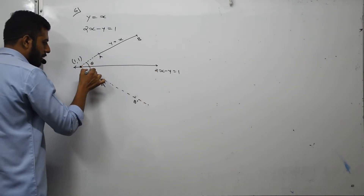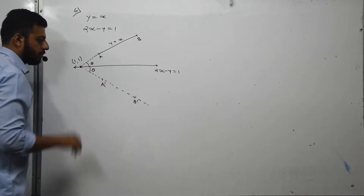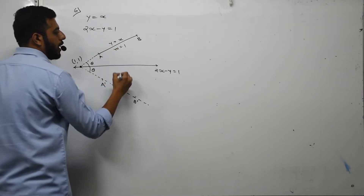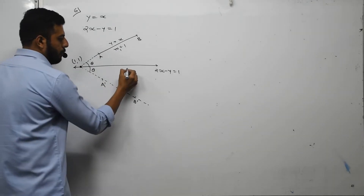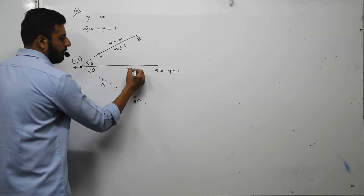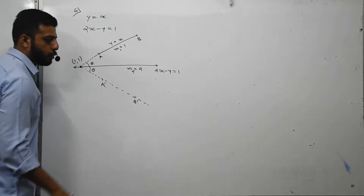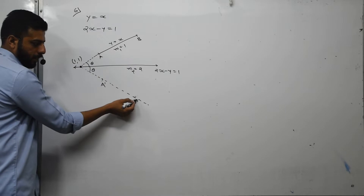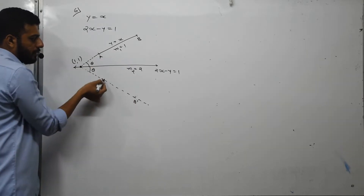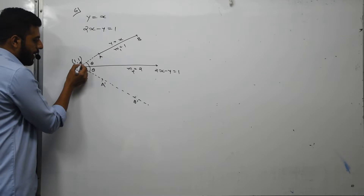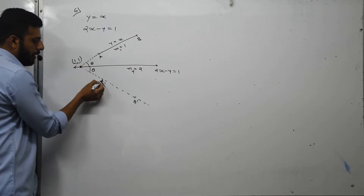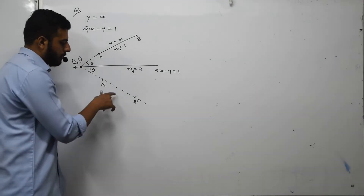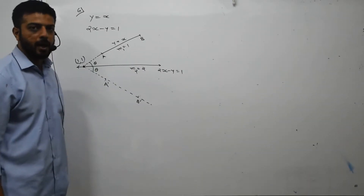The angle will be the same — call this theta. The slope of line AB, M1, equals 1. The slope of 2x minus y equals 1, M2, equals 2. We need to find the equation of line A prime B prime, the image of line segment AB. We already have a point on line A prime B prime, which is (1,1), so we just need the slope.